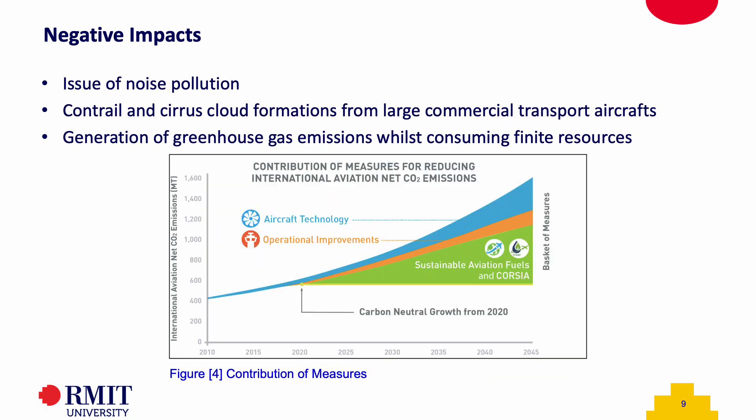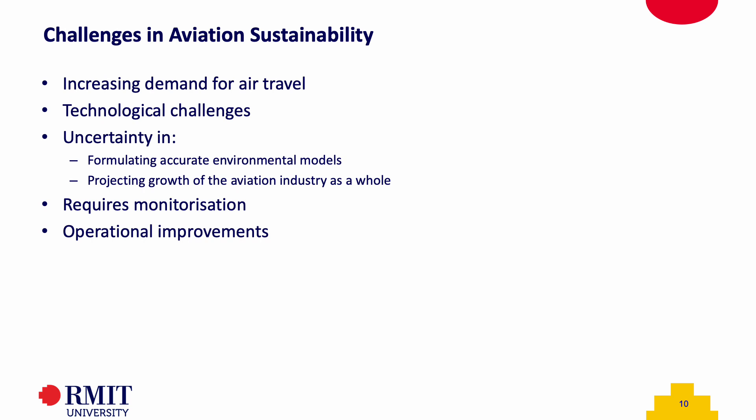Greenhouse gas emissions and finite resource consumption have also been a large part of the negative impacts that large commercial aircrafts have contributed. This is due to the domination of a finite resource, jet kerosene, in the aviation industry. Sustainable aviation fuels account for less than 0.1% of aviation fuel consumed. It is why research and implementation of sustainable aviation fuels and programs such as CORSIA are able to have such a large contribution toward reducing international emissions. While large commercial transport aircrafts have made steps towards improving aviation sustainability, with the growth of air travel, challenges still remain. Uncertainty poses a large challenge for both creating environmental models and projecting growth within the industry, and efforts to mitigate emissions must be further implemented and constantly monitored.